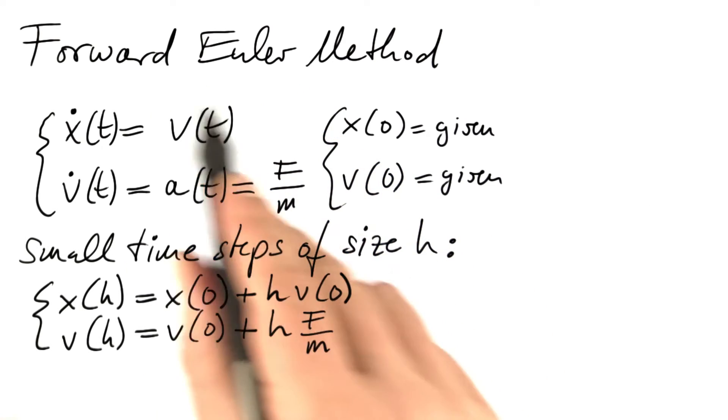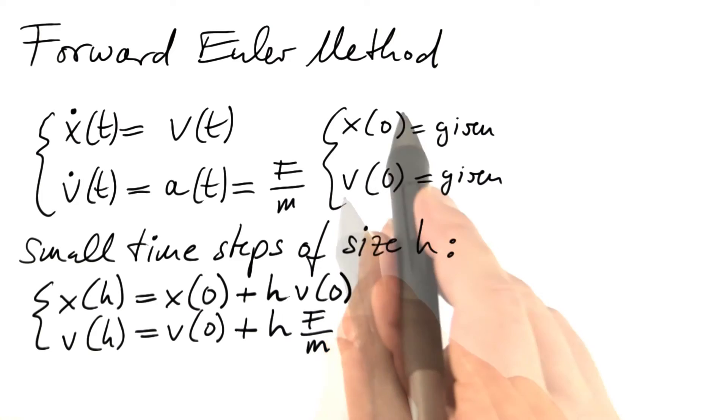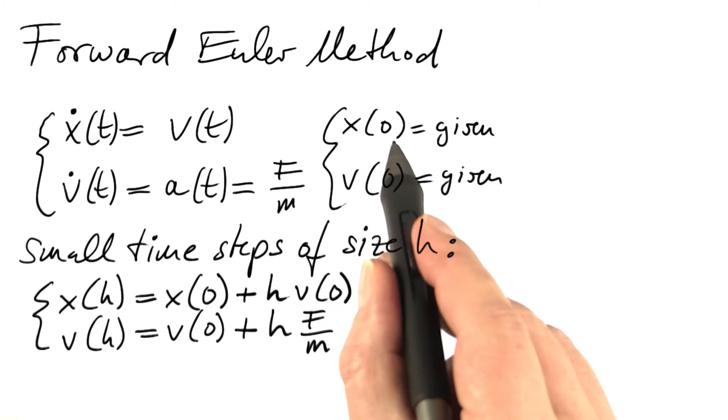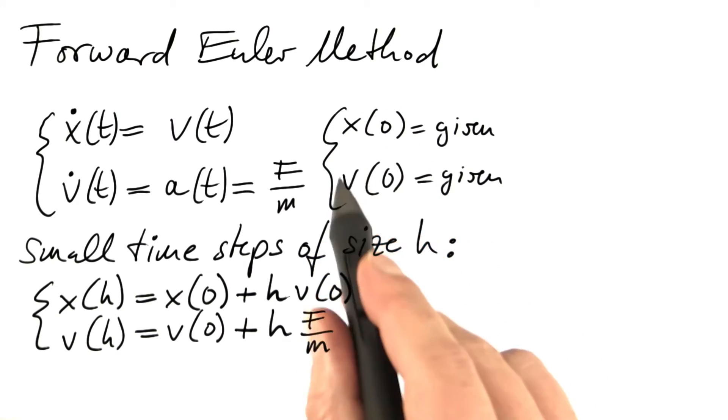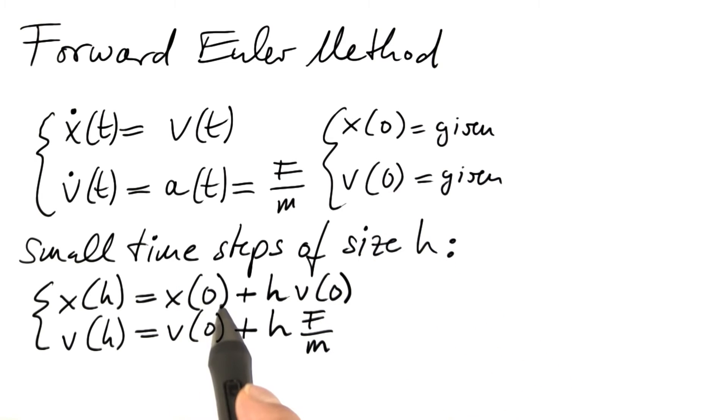Euler's idea was to solve these equations by walking in small time steps. If we start at the initial position, x of zero, and the initial velocity, v of zero, what would happen after a short time span we call h? The position would approximately increase by h times the velocity.